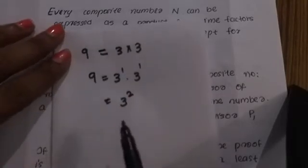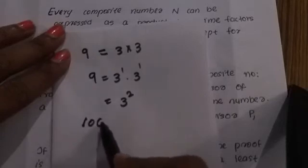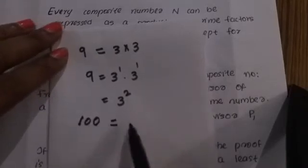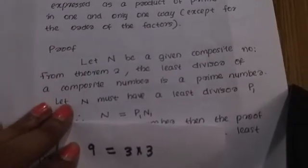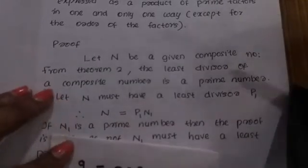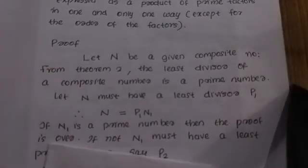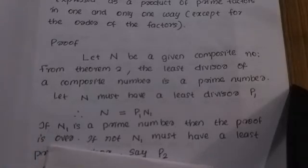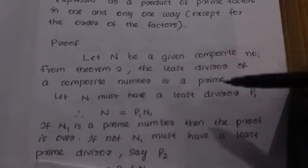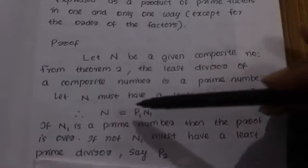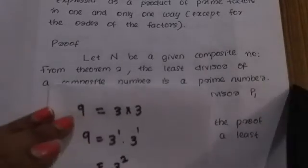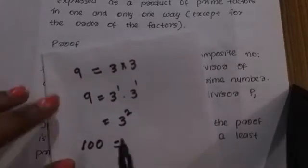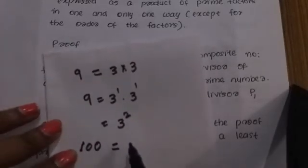Take a large number — for example, 100. Let n be a given composite number. By Theorem 2, n must have a least prime divisor P1, so n equals P1 times N1. We multiply the prime factors of n, writing the prime factorization step by step.